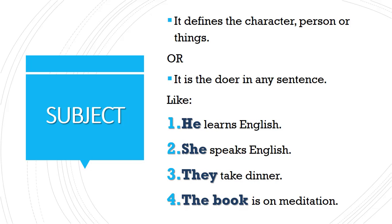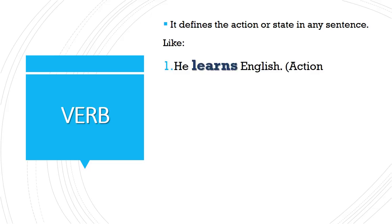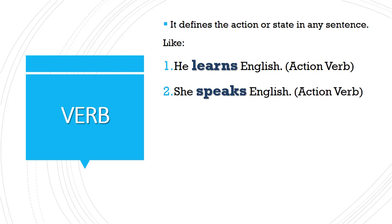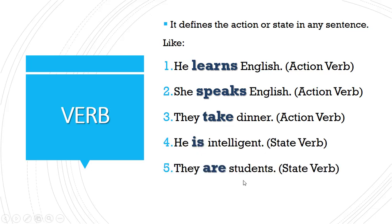The verb defines the action or state in any sentence. In 'He learns English,' 'She speaks English,' and 'They take dinner,' action verbs are used. 'Learns' is the action verb in the first sentence, 'speaks' is the action verb in the second, and 'take' is the action verb in the third sentence.